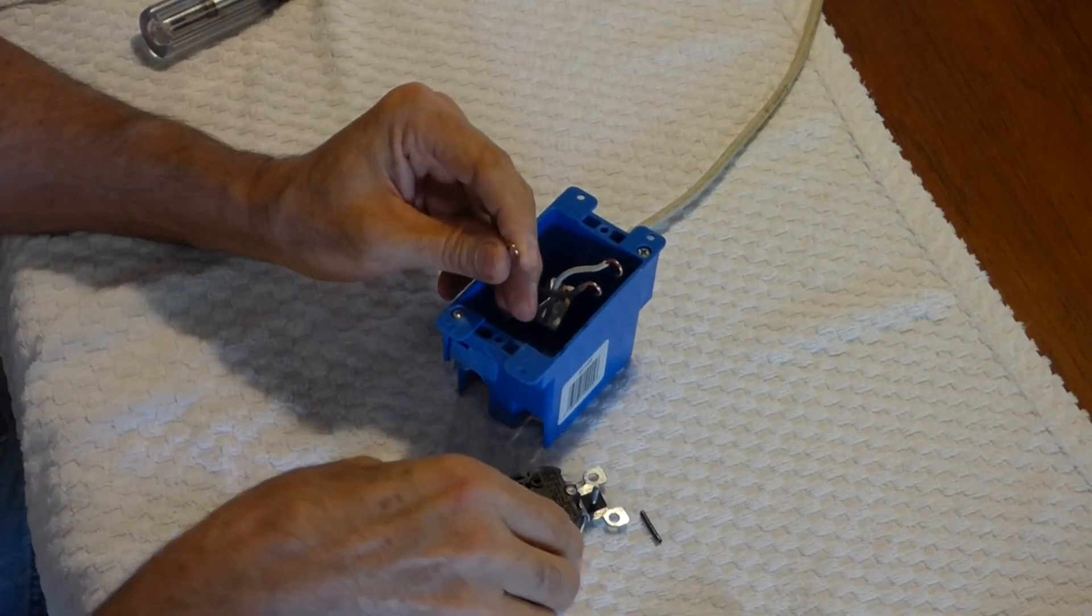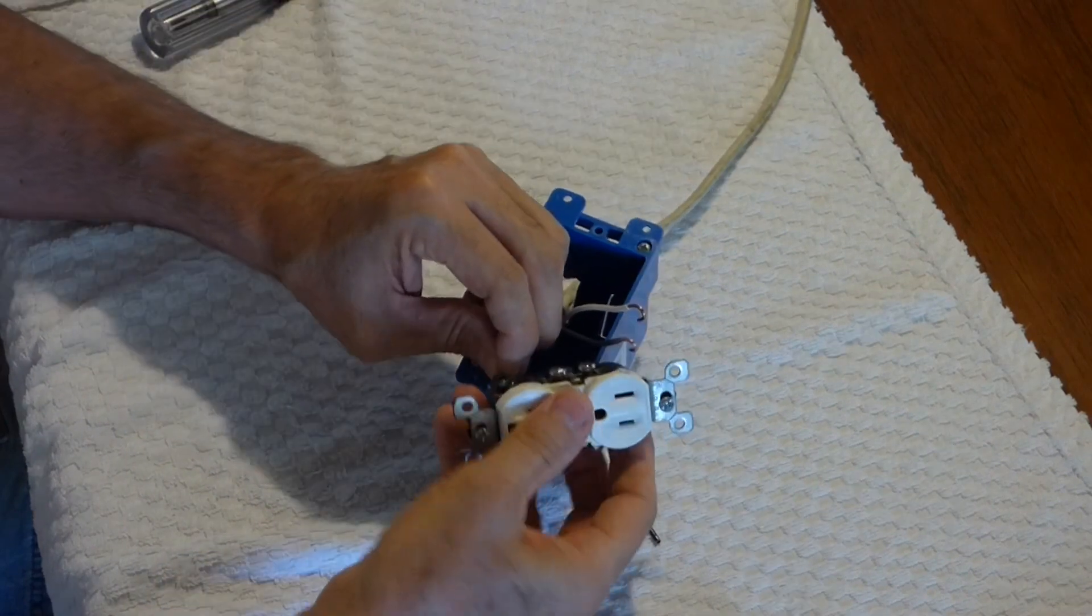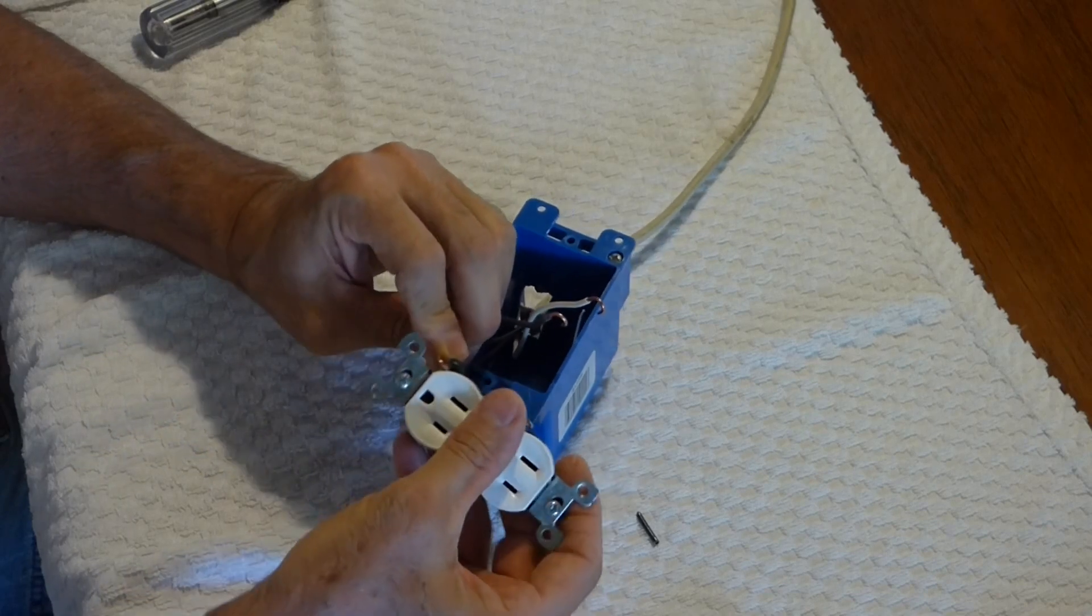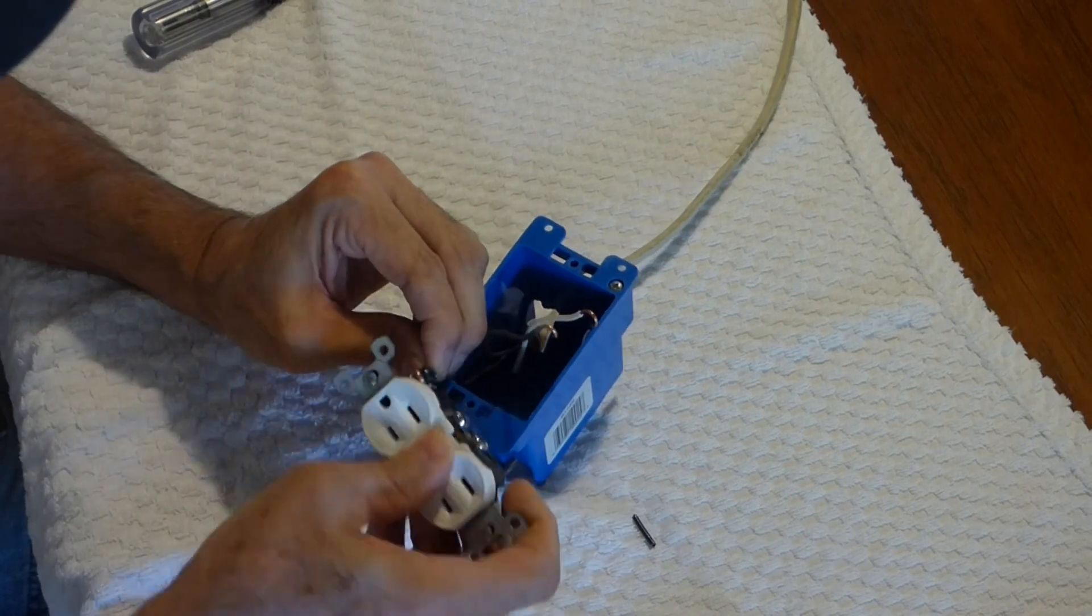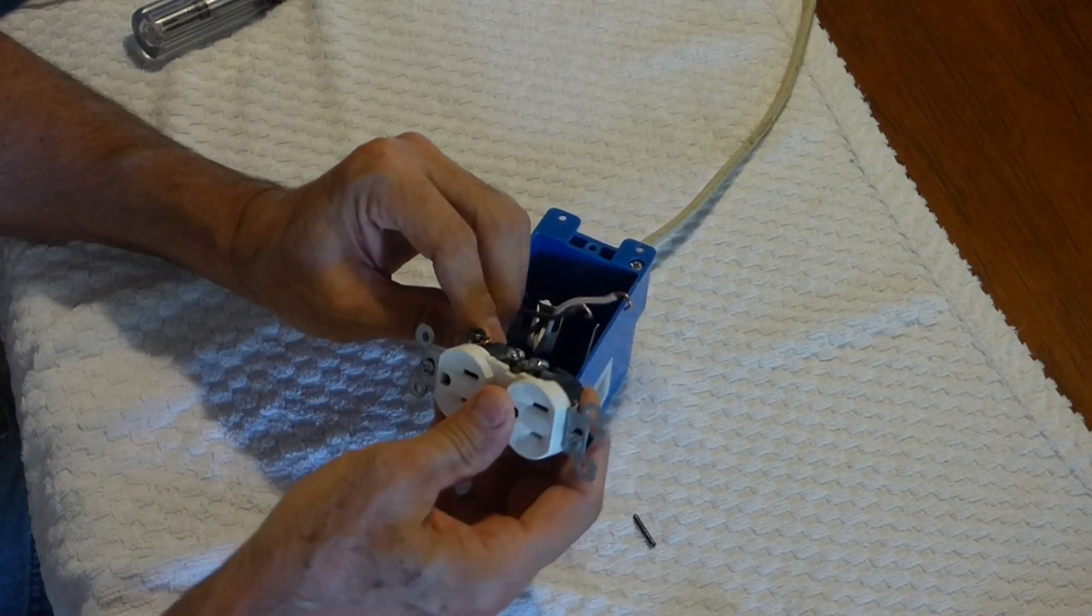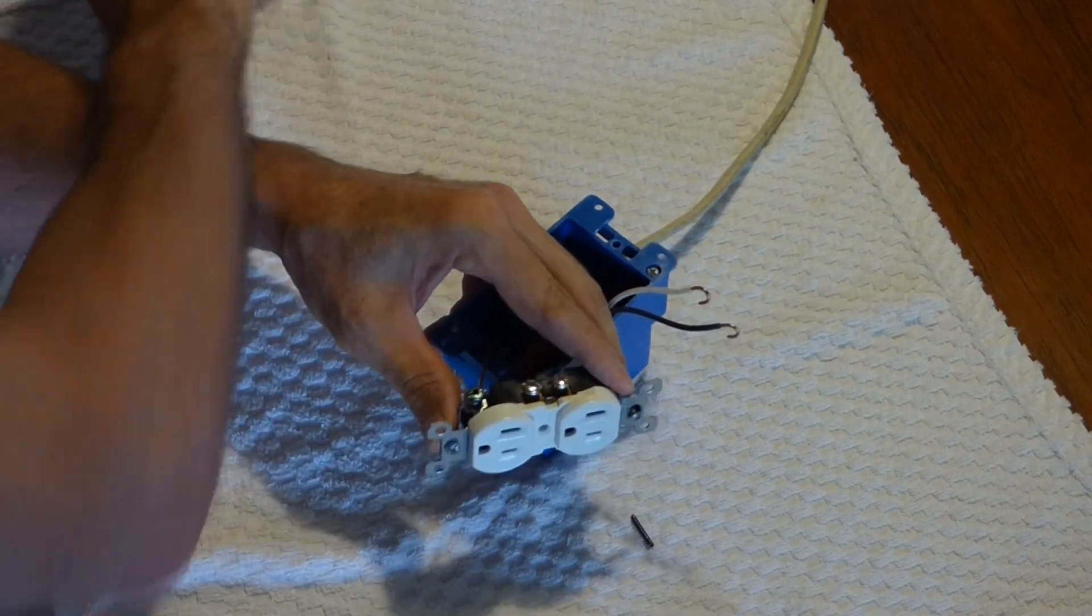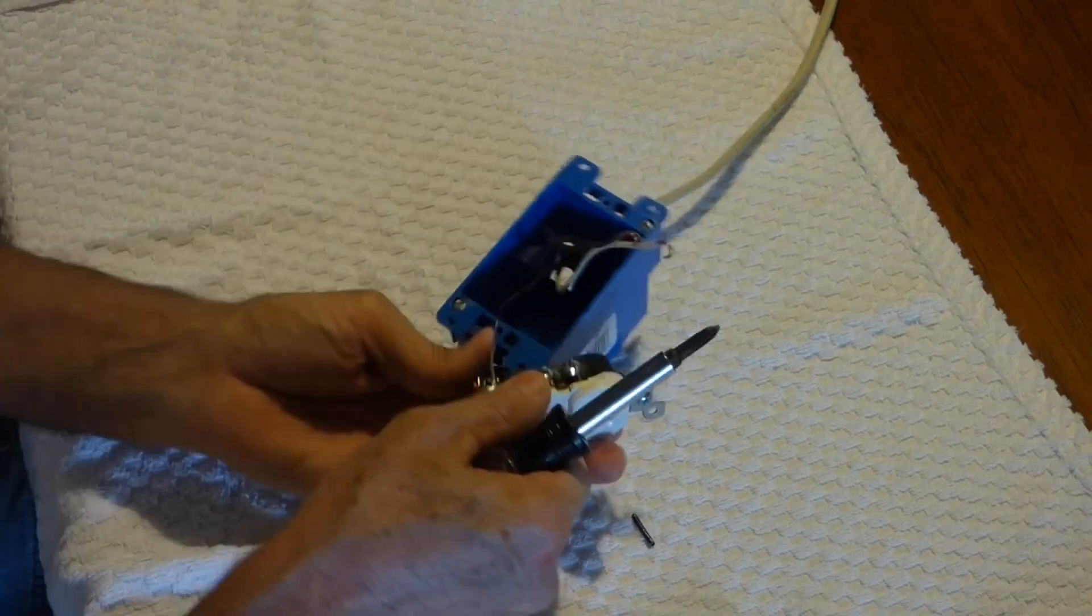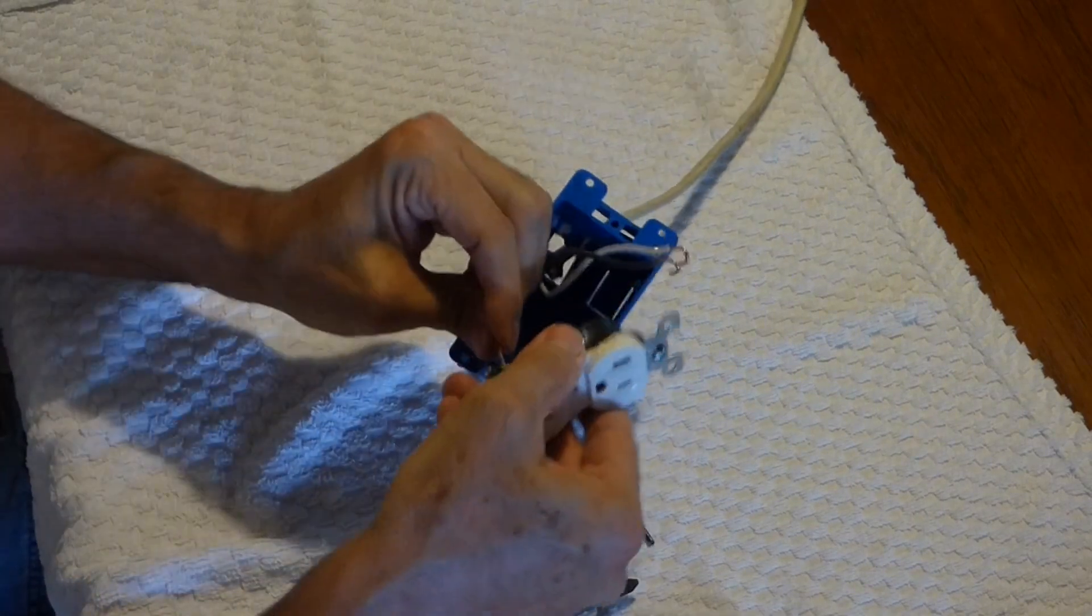Now with that done, I hook up the ground wire first. You don't want to put it on like this, because when you tighten, it's going to have a tendency to want to push that wire out. So you make the shepherd's hook or the J hook in the same direction that you'll be tightening the screw. Just set that on there, take your screwdriver, tighten that down, and you want to make sure you're good and snug. Double check that.